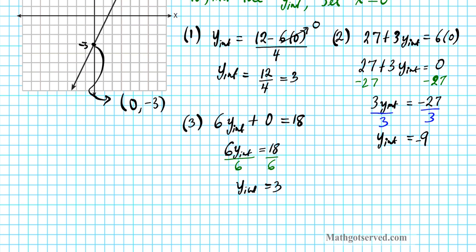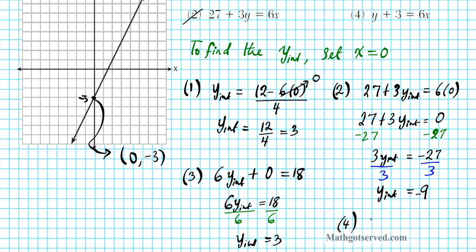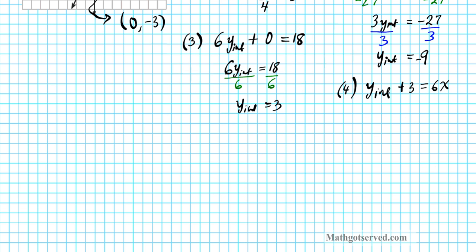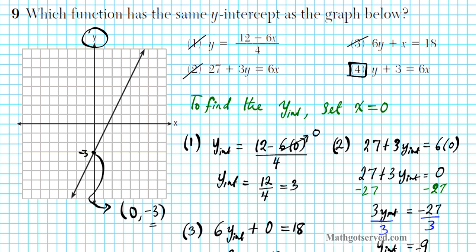Let's verify option 4. Setting x to 0, we have y plus 3 equals 6 times 0, which is 0. Subtracting 3 from both sides gives y equals negative 3. That is exactly what we want. So option number 4 is our correct answer.